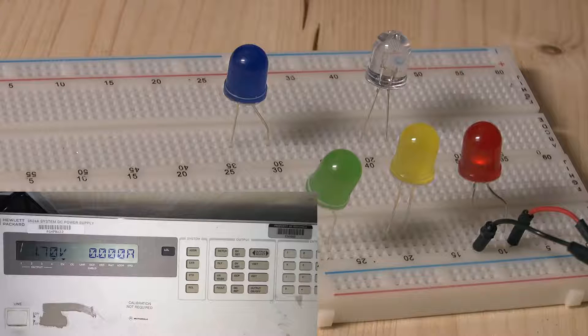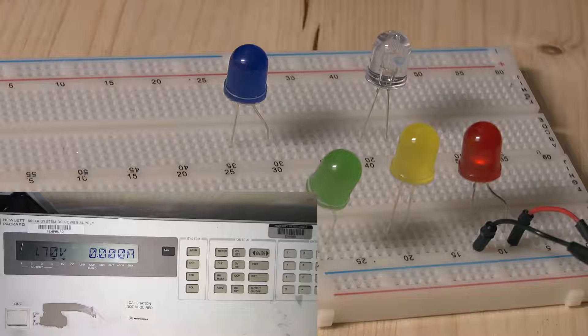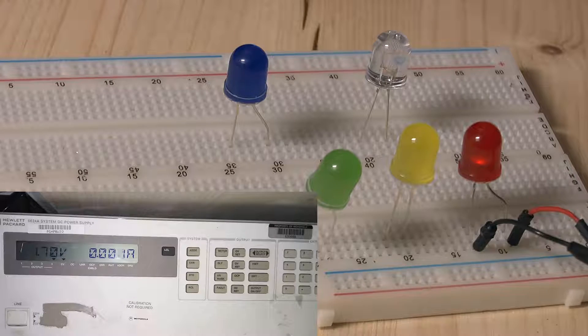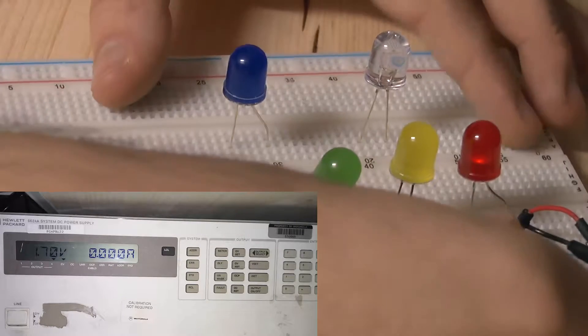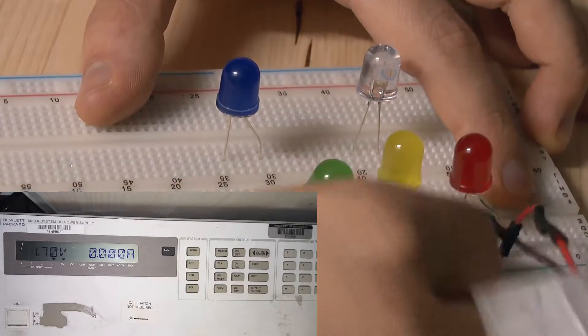And now we've got a voltage of 1.7V and we see that the red LED is lighting up. Let us try what happens if we connect the yellow LED next.